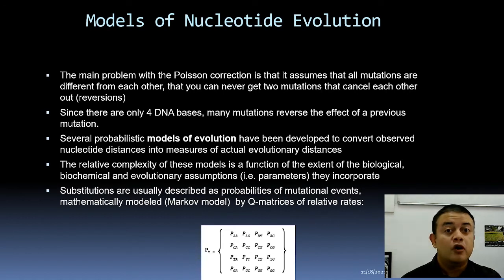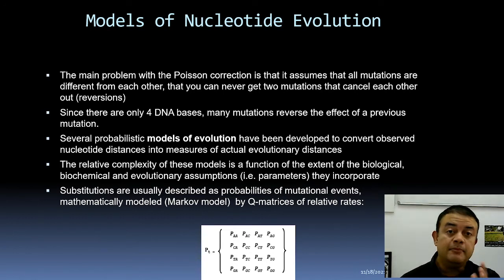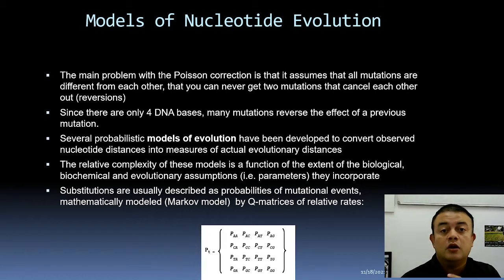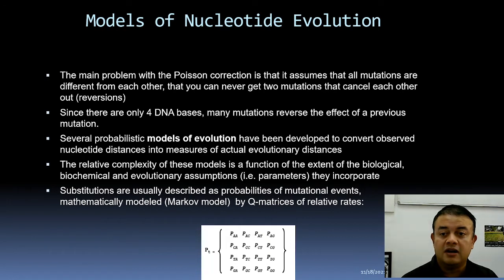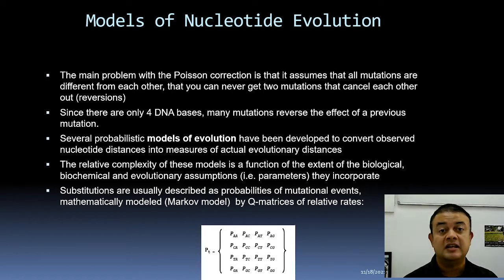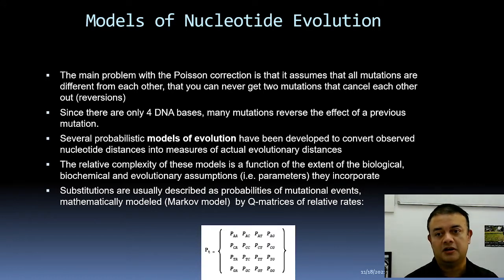In the last class we saw the Poisson correction to correct the p-distance. The main problem with the Poisson approximation is that it assumes all mutations are different from each other, so you never get reversals — back mutations that cancel out the earlier one.